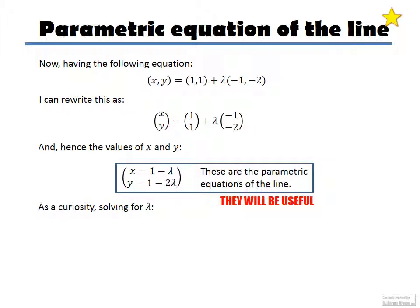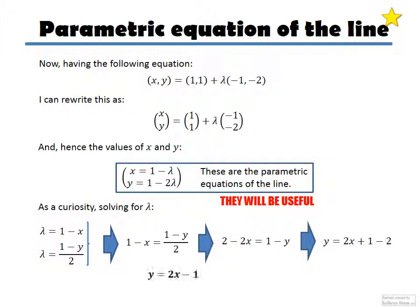If I solved for lambda, and this is just a curiosity, because actually this is not in your syllabus, I would end up with these things here, and I could say that this is equal to this, and that would be called, if I just operate this, my good old traditional equation of the line. So you see, I can get the same thing starting from here. And that makes sense, because after all, they are the same line.